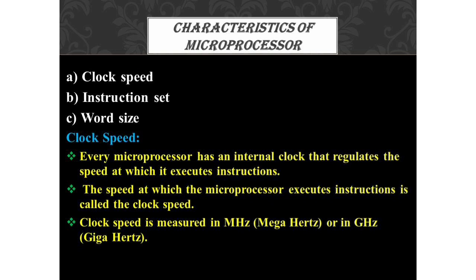Now we will see the characteristics of microprocessors. The microprocessor's performance depends upon the following characteristics: clock speed, instruction set, and word size. The first one is clock speed. Every microprocessor has an internal clock that regulates the speed at which it executes instructions. The speed at which the microprocessor executes instructions is called the clock speed. It is measured in megahertz (MHz) or gigahertz (GHz).